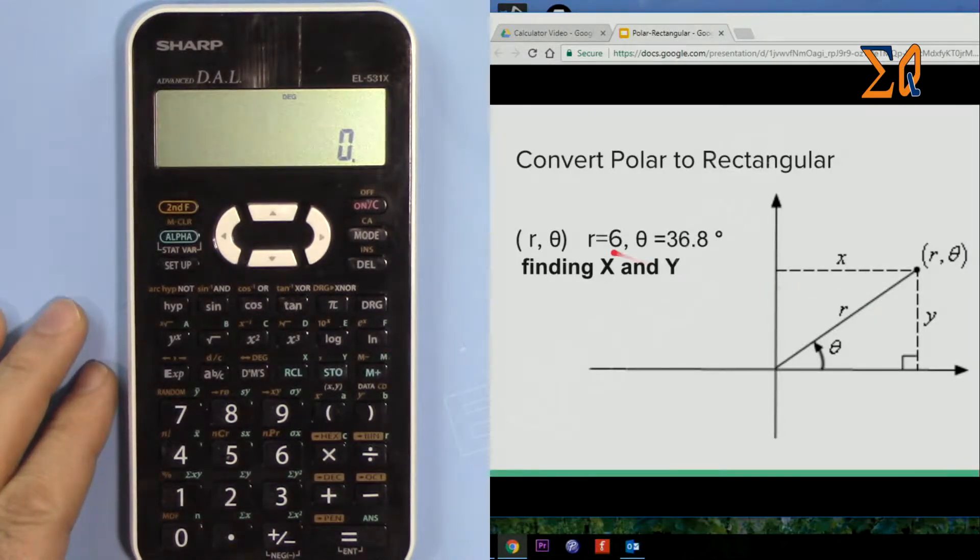So let's say we have r, the magnitude or radius, is 6, and theta is 36.8 degrees. We want to find X and we want to find Y.